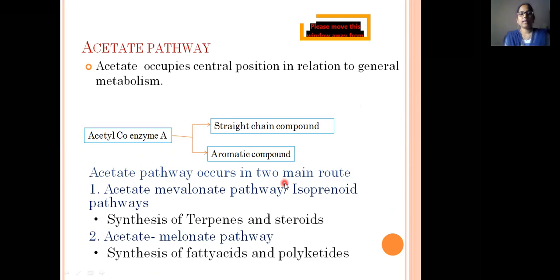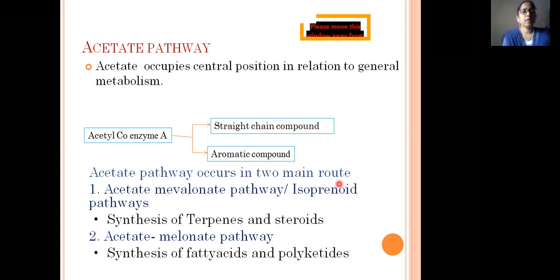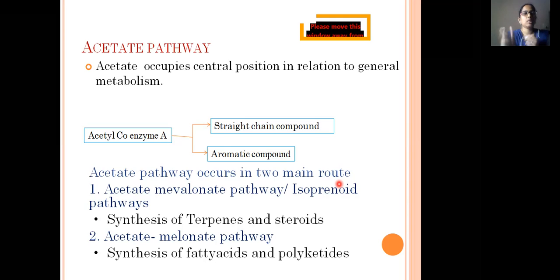The acetate pathway occurs mainly via two routes. The first is the acetate-mevalonate pathway, also known as the isoprenoid pathway, because it leads to the biosynthesis of isoprenoids. It is also known as the HMG-CoA reductase pathway or simply the mevalonate pathway.